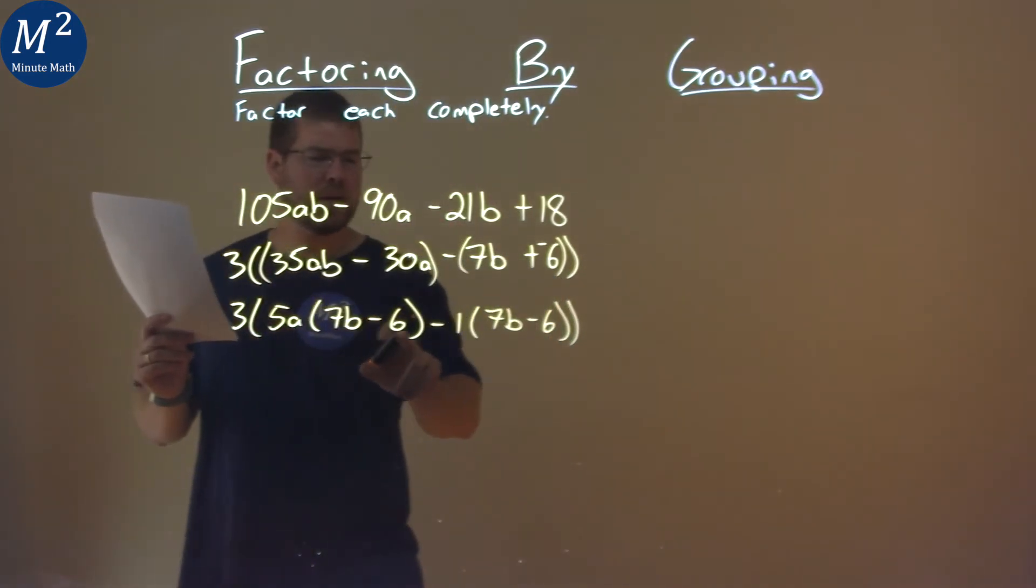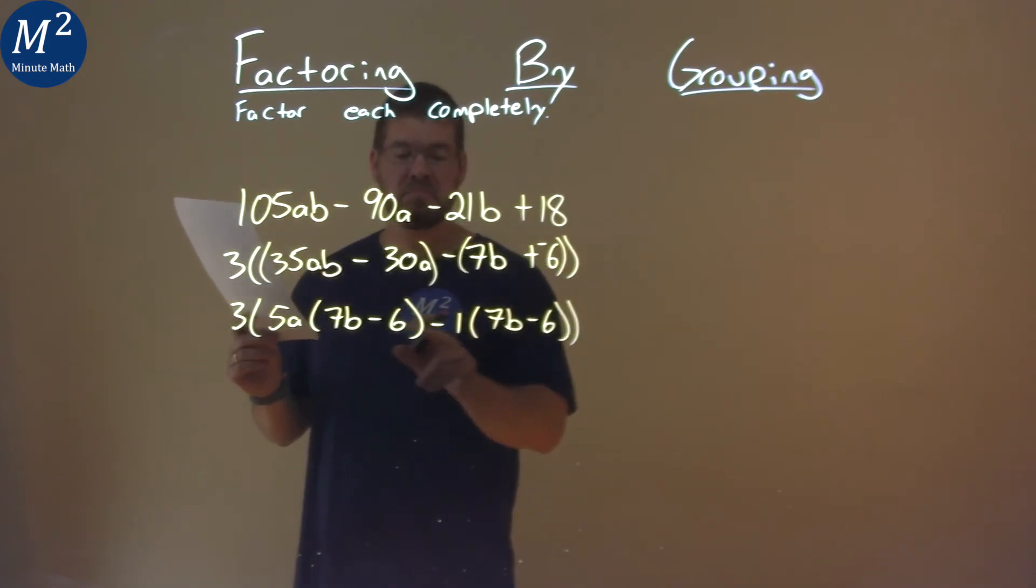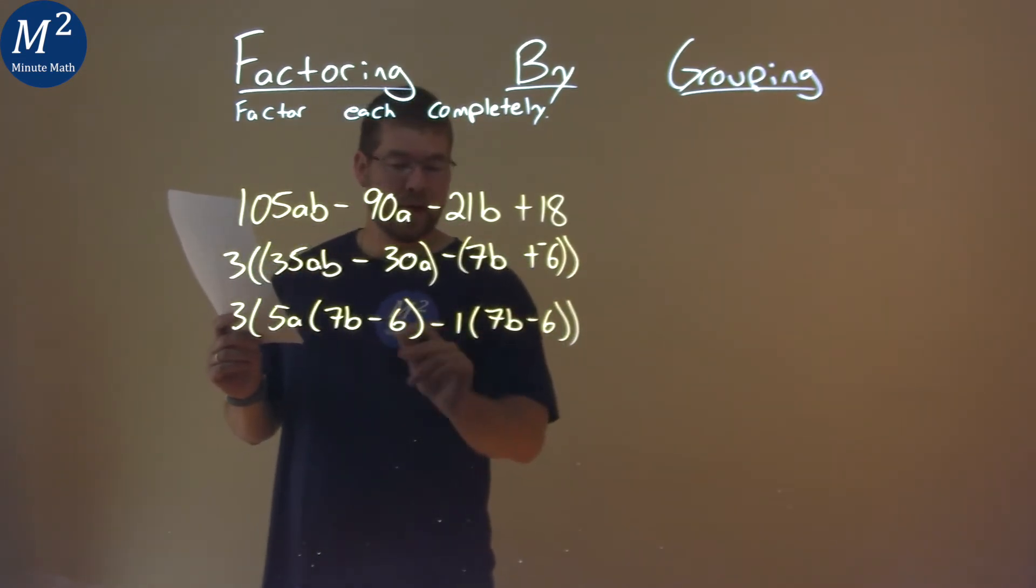Well, 7b minus 6 is now written twice. Not bad. So by doing that, I can pull out a 7b minus 6 from both parts here.